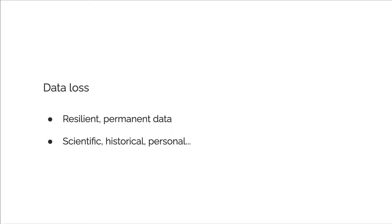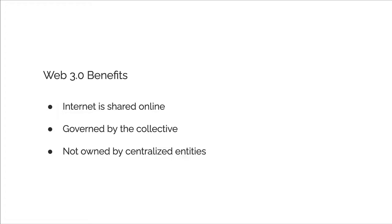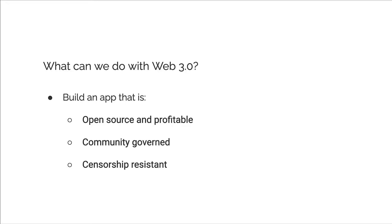With Web2.0 there's a lot of data loss — data being stolen, or accidentally deleted. How do we address data that needs to be permanent, like personal, historical, scientific, or medical records? With Web3.0 we can prevent data loss because everything put on the blockchain is permanent. The internet is shared and governed by a collective — not owned by centralized entities — so there's less monopoly. With Web3.0 you can build apps, dApps, or decentralized websites that are open source, profitable, community governed, and censorship resistant.